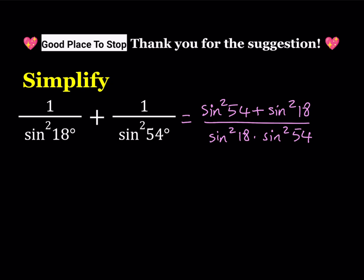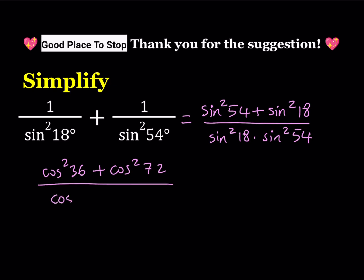I'm going to use the co-function identity, which means that if two angles are complementary — they add up to 90 degrees — then one of the sines will equal the cosine. So instead of sine 54, I can write cosine 36 (squared), and instead of sine squared 18, I can write cosine squared 72. You'll see why I'm turning them into 36 and 72 — we get really nice relationships, and 72 is 2 times 36, which will also be helpful. So we can write this as cosine squared 72 times cosine squared 36 at the bottom.